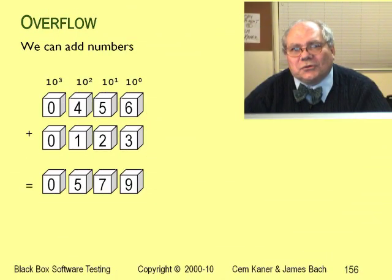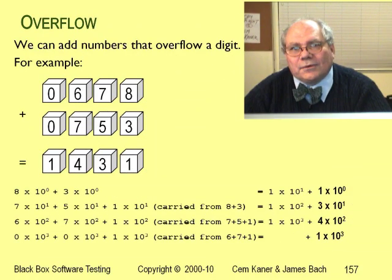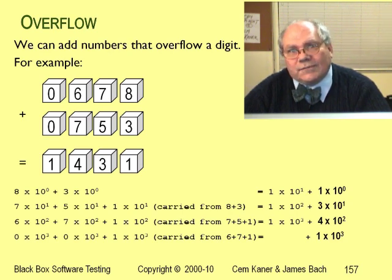Here's what addition looks like with number blocks. And here's how we deal with overflows. 8 plus 3 is too big for one block, so it becomes 11. One for the ones block, and one for the tens block. 7 plus 5 would be 12, but we're carrying a 1 into the tens block, so this becomes 13. 3 for the tens block, and 1 carried to the hundreds block.